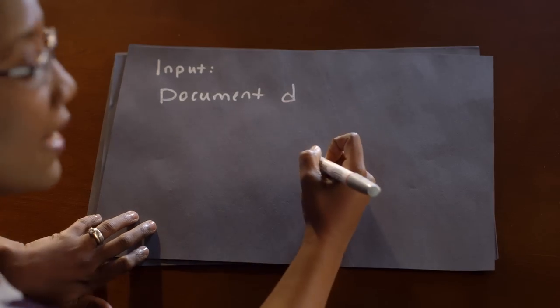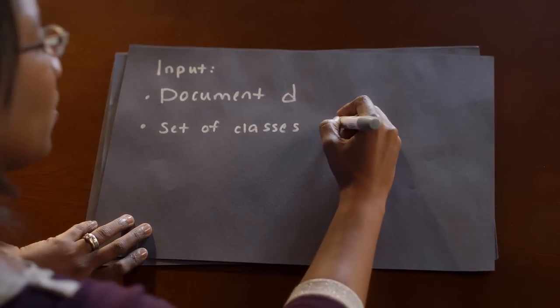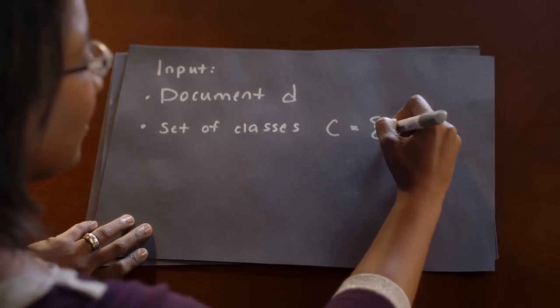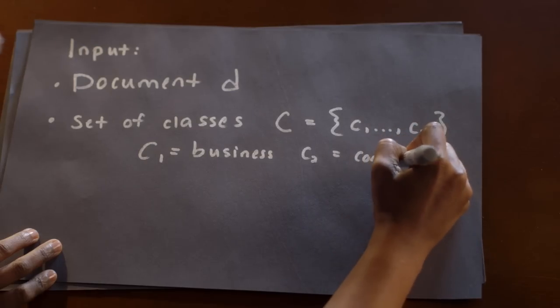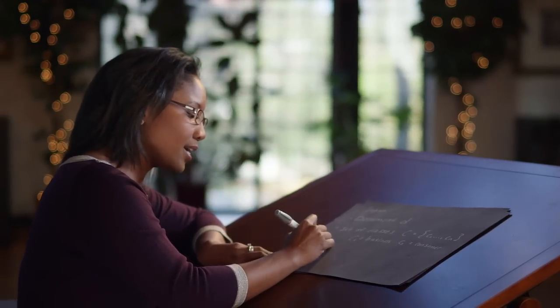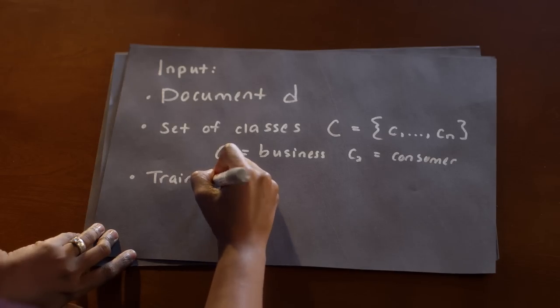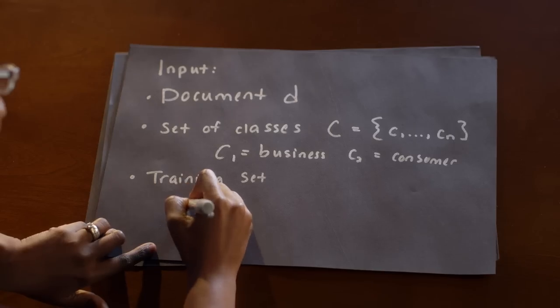We first start with input. What's going to go into our algorithm is a document D. In our case, that document is going to be text that comes from a particular message. We're also going to have a set of classes, which we'll call C, where it could be any of N such classes. In our case, we only have two: C1 could either be a business, or C2 could be a consumer. Lastly, our input is a training set of M documents. This training set consists of data that we've already pre-classified, where we know the correct document and the correct class that it belongs to.